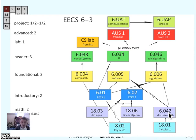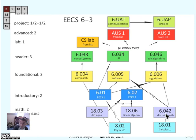If you look at the catalog, 6042 lists 1801 as a prerequisite. If you look at the introductory algorithms class 6006, you'll find in the catalog that it has two listed prerequisites: 6042 and 601. The fact that they're explicitly listed in the catalog as prerequisites is why there's an arrow from 601 to 6006 and from 6042 to 6006.